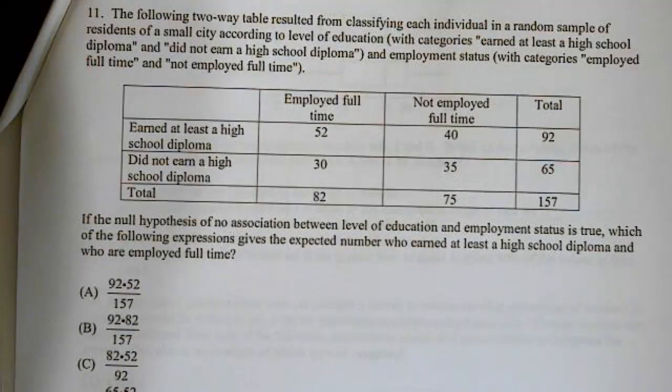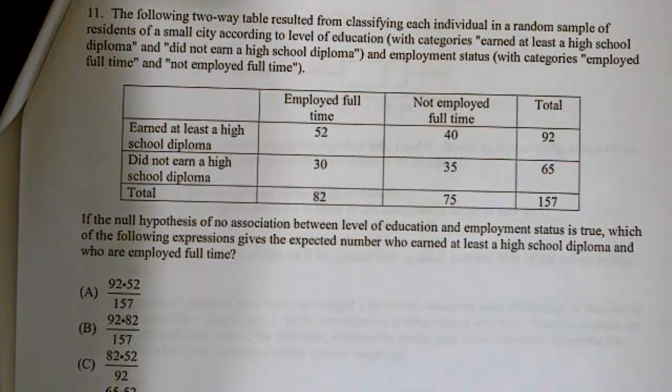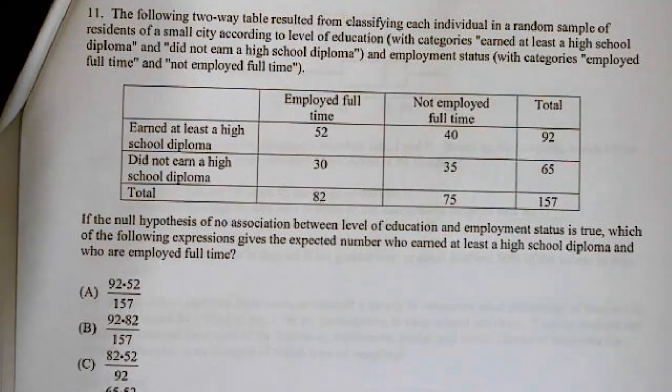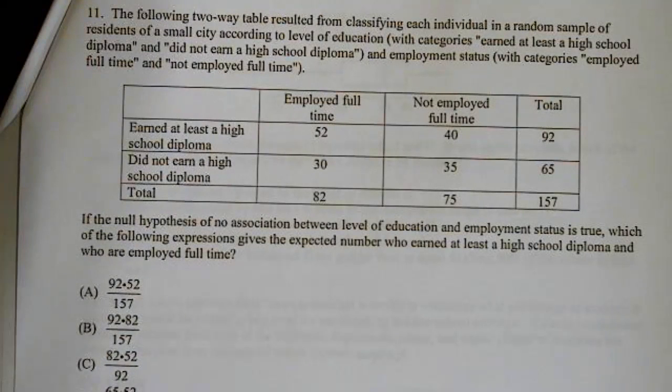Good morning. This is your stats sensei, Mr. Spencei, and we're going to work problems 11 through 21 for exam A extra credit. The following two-way table resulted from classifying each individual in a random sample of residents of a small city according to level of education (earned at least a high school diploma and did not earn a high school diploma) and employment status (employed full-time and not employed full-time).